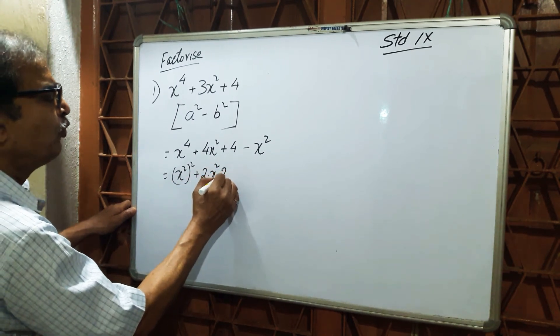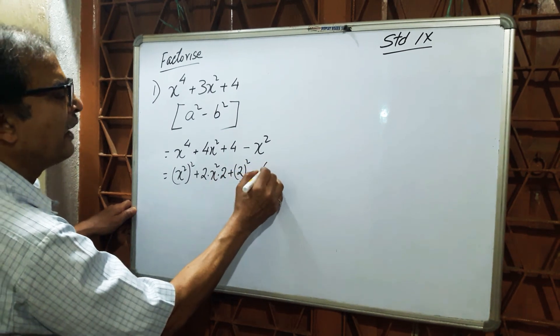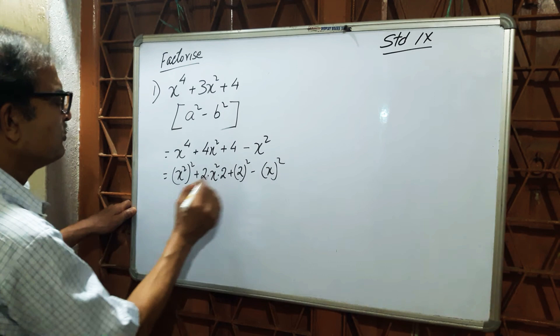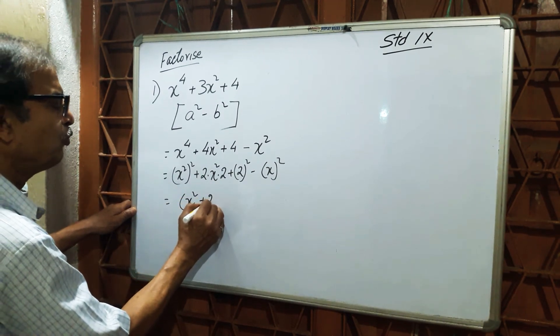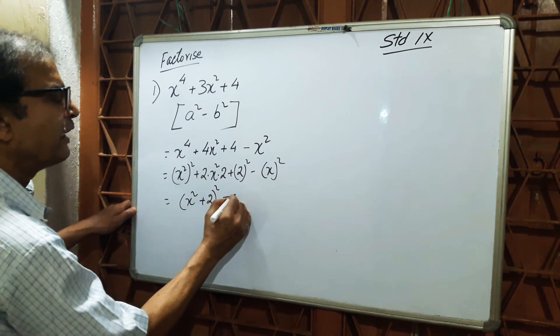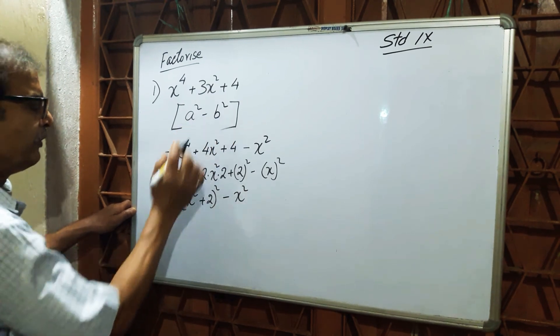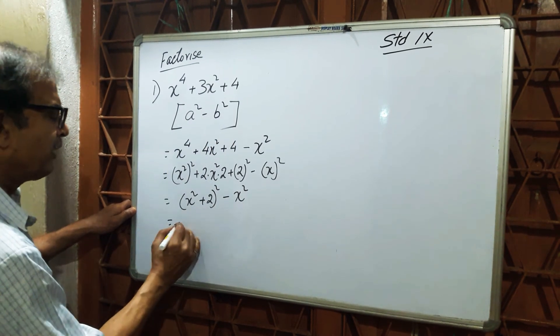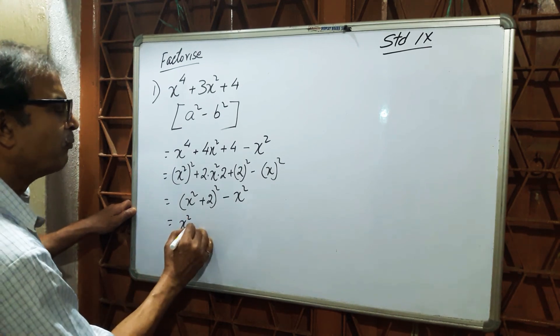Into 2 plus 2 whole squared, and it is minus x squared. Now you see x squared plus 2 whole squared minus x squared. This is the form of a squared minus b squared. Automatically you can write like this: x squared plus